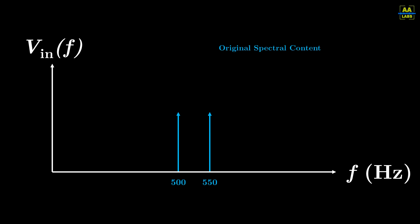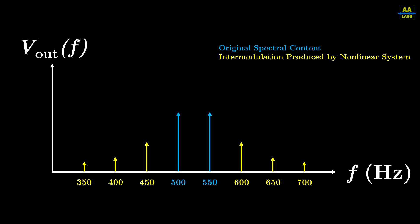If you put a signal containing two pure sine tones into a nonlinear system, you will get an output that contains additional spectral content separated from the tones by the distance between the tones. These intermodulation products extend outward from the original spectrum, similar to how harmonics behave.